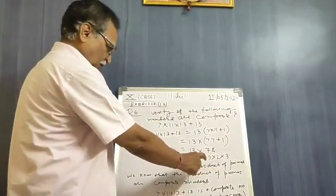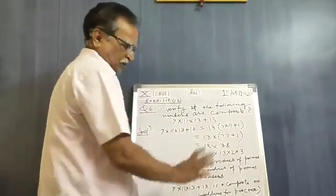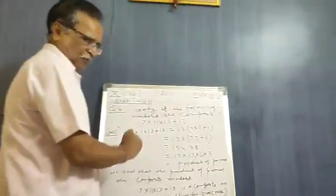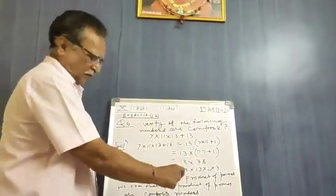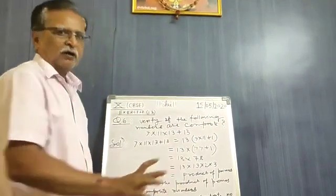So now these are all prime numbers. This means the number is the product of prime numbers. And the product of prime numbers is composite.